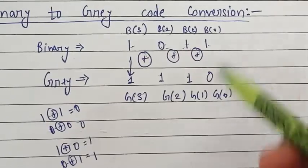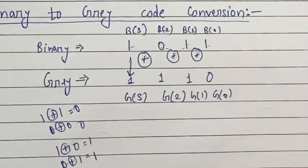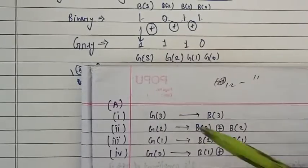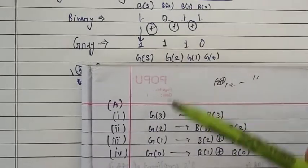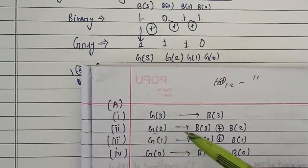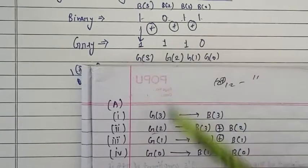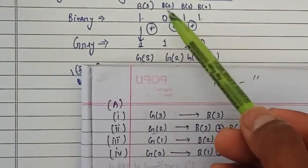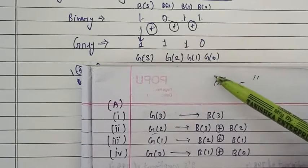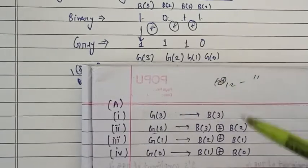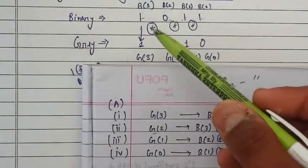If you want to see the theoretical representation of binary to gray code conversion: for g3, the same value of b3 is used. For g2, you XOR b3 and b2. For g1, you XOR b2 and b1. For g0, you XOR b1 and b0. This is the theoretical representation we can use to solve binary to gray conversion.